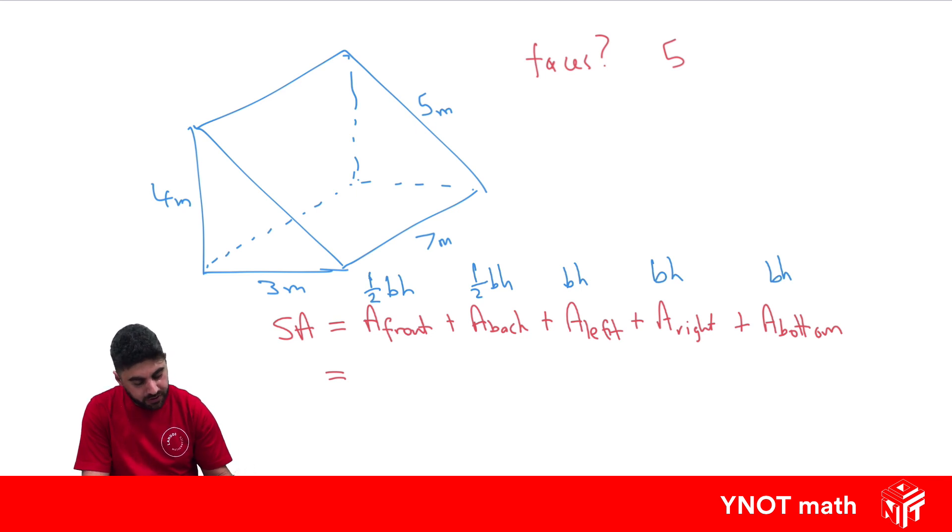For the triangle at the front, it's a half times 3, the base, times 4, the height. Same with the back triangle, half times 3 times 4. Plus the area of the left rectangle is 7×4. Plus the area of the right rectangle, which is 7×5. Plus the area of the bottom rectangle, which is 7×3.